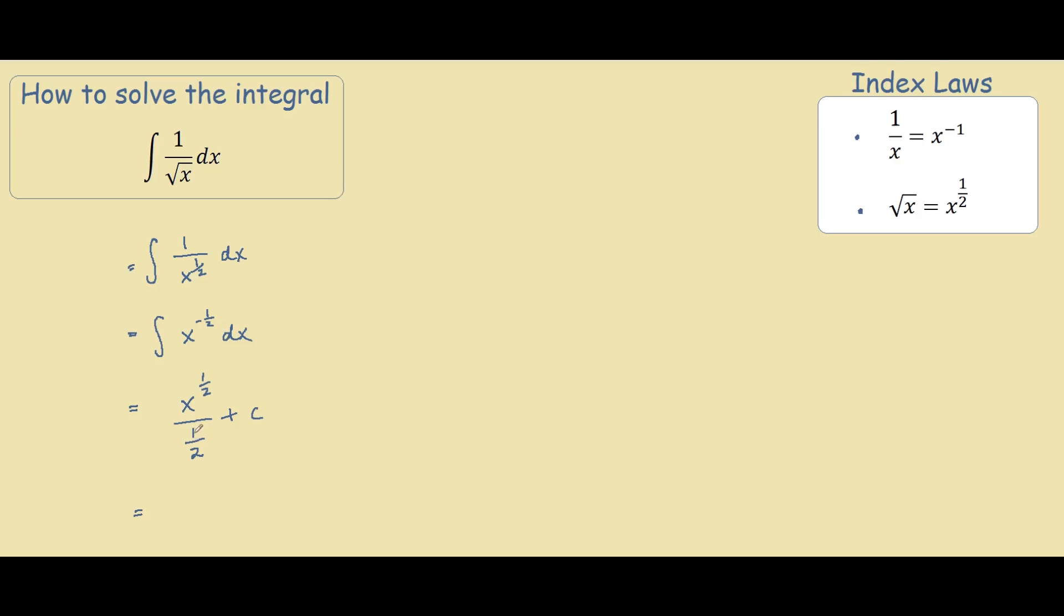And we know that 1 divided by 1 half is just 2, so we have 2 times x to the power of half, and as we stated earlier, that x to the power of half is actually the square root of x. So 2 times the square root of x plus c, and that is our answer.